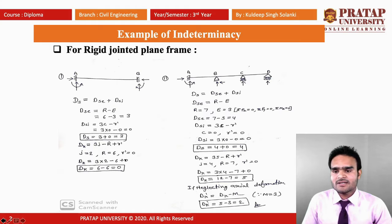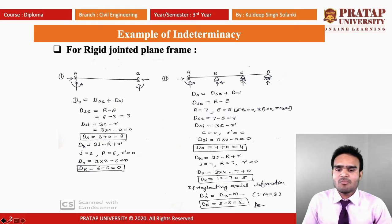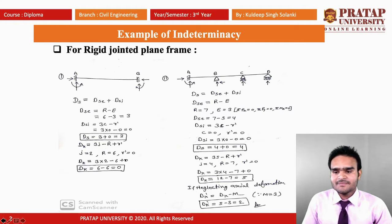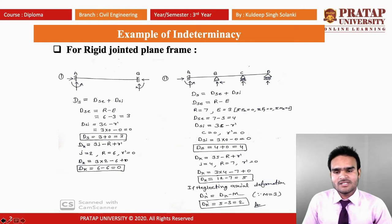Now we calculate the kinematic indeterminacy DK for this beam. The formula is 3J minus R plus R-dash. J is the number of joints — two joints A and B are available, so J equals 2. R is the number of reactions, which is 6. R-dash is 0 since no hinges are available. So DK equals 3 times 2 minus 6 plus 0, which equals 6 minus 6, equals 0. The kinematic indeterminacy is 0 for this fixed beam.